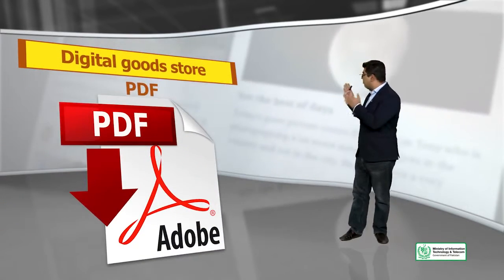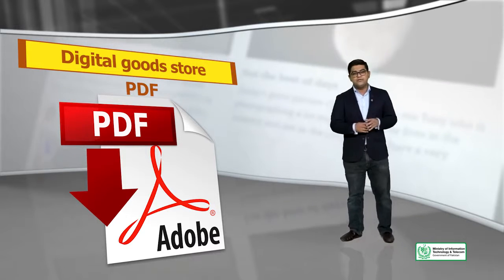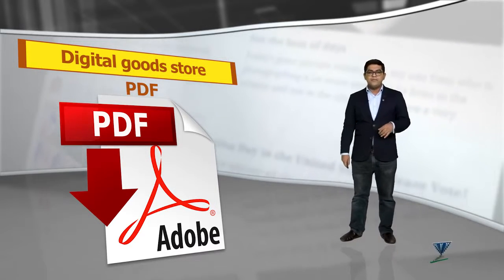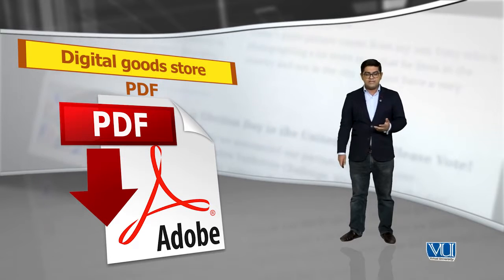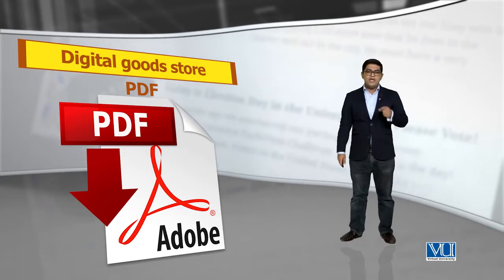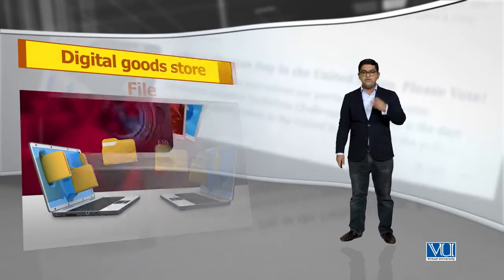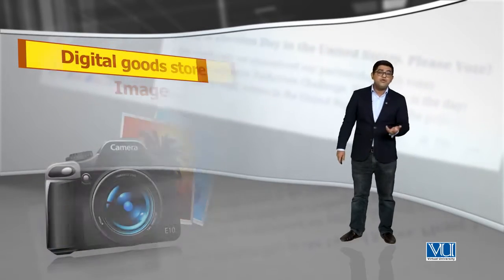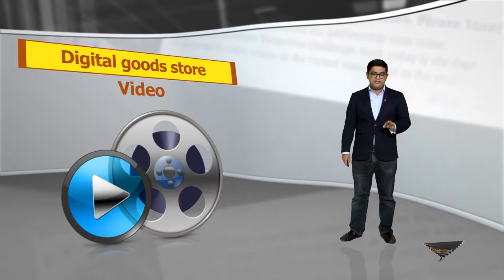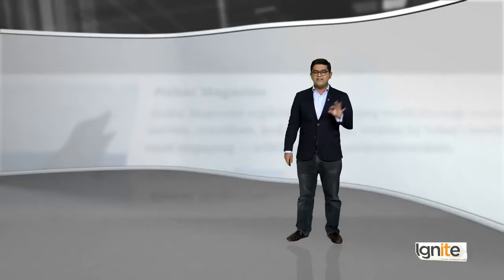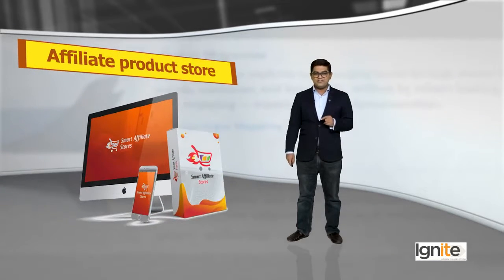Ek aur store ki type is a digital goods store — ek aisa store jis pe aap koi bhi digital goods sell karenge. Digital goods kya hota hai? It could be a PDF, a file, an image, a photo, a video — koi bhi aisi cheez jo ke intangible hai, that is a digital goods. It could be an affiliate product store — yaad hai maine aap ko affiliate marketing ka bataya tha — so this is the right topic to learn affiliate marketing or creating an affiliate product store.